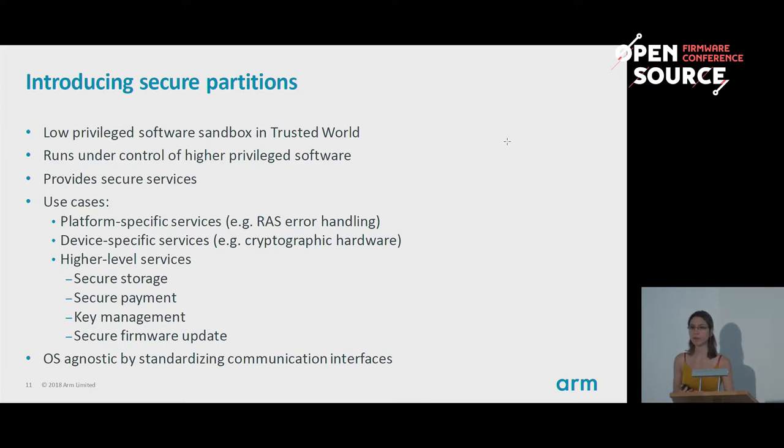To illustrate what a secure service is: you might think about platform-specific services like RAS error handling — when you have a hardware error like a memory corruption, you might not be able to recover, but you could read platform-specific registers to build an error report. You could also have device-specific services: if you have cryptographic hardware on your platform, you might want a dedicated secure service that controls that hardware and all other software must interface with this secure service to access the cryptographic hardware behind it.